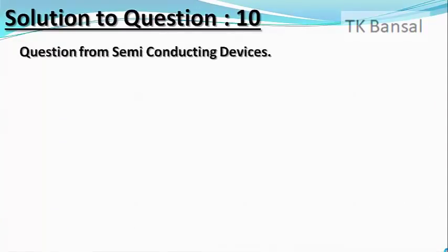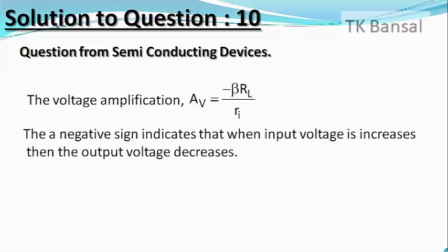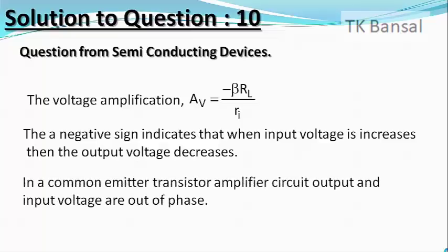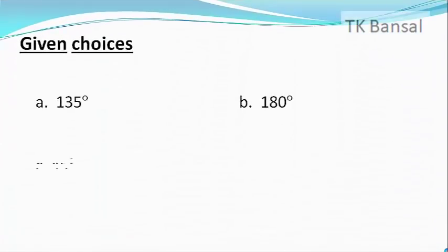We know that in a common emitter transistor amplifier circuit, the voltage amplification A_V is given by −β R_L/R_i, where β is the current amplification, R_L is the load resistance, and R_i is the input resistance. The negative sign indicates that when the input voltage increases, the output voltage decreases and vice versa. This means the output and input voltages are out of phase by 180 degrees, and therefore choice B is the right answer.